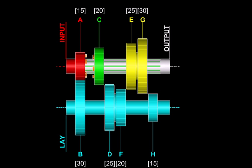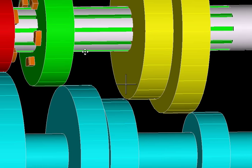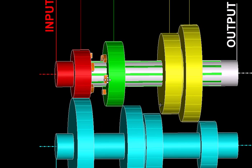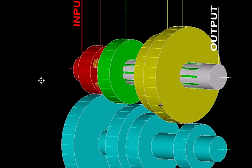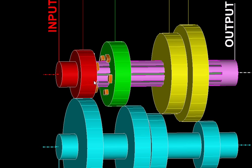Moreover we have provided some teeth on the face of this green gear here, so that it can directly engage with the red gear on the other side. This type of engagement is called the dog clutch. So now we are going to slide these gears and achieve various ratios.